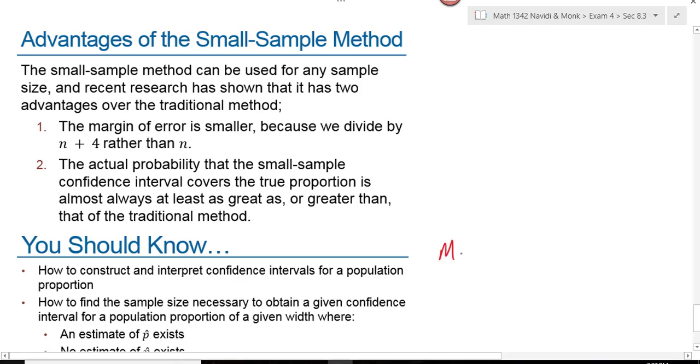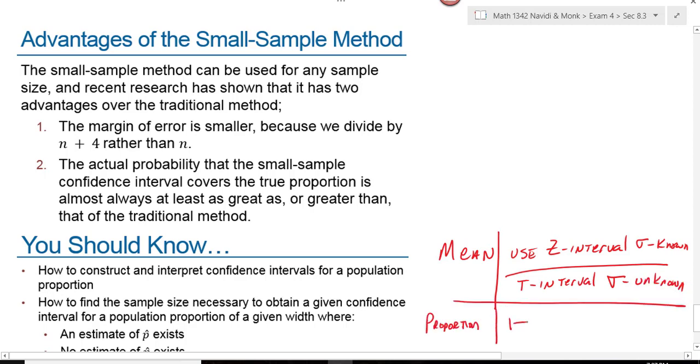So if we're finding confidence interval for a mean, we use a Z interval if sigma is known, we use a T interval if sigma is unknown, and for a proportion, we use the one prop Z interval on your calculator. And this wraps up section 8.3.